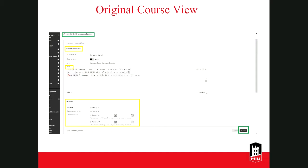If you created the forum from a content area or folder, you'll see a screen to create your link to the discussion forum you just created. You need to add a title, and make sure that under Options, the availability is set to Yes so that students can access the link. Note that this link availability is separate from the forum availability — if the link is available but the forum is not, students won't be able to access the forum. If the forum is available but the link is not, students could still access the forum from the Discussion Board tool in the left-hand navigation menu. So if you want to restrict students from accessing the forum, do that in the forum settings, not in the link settings.